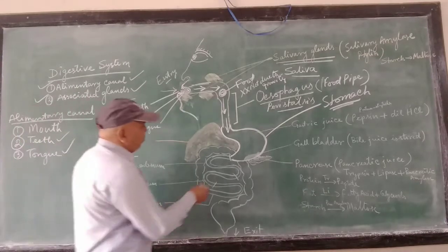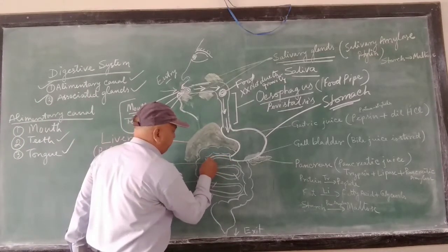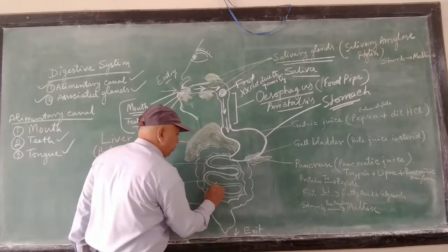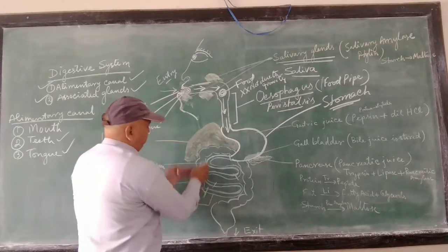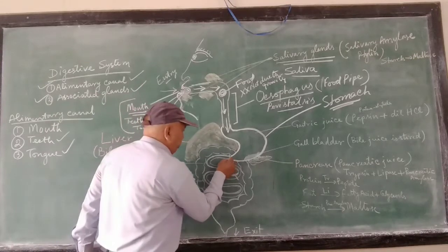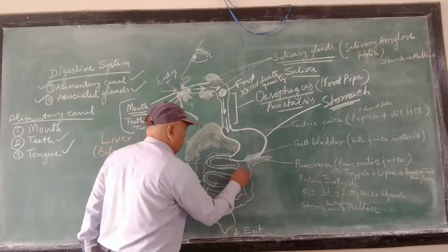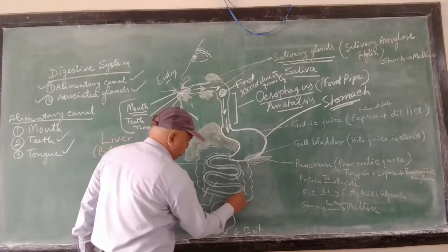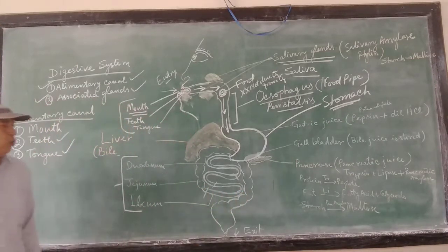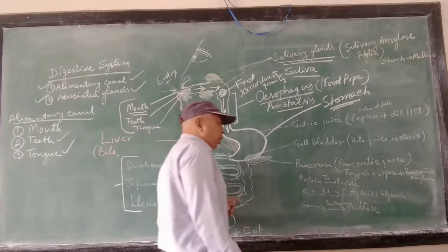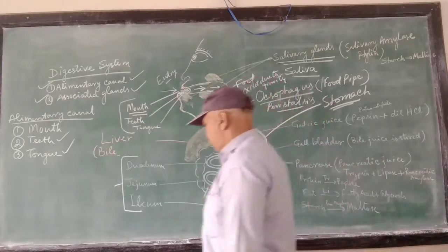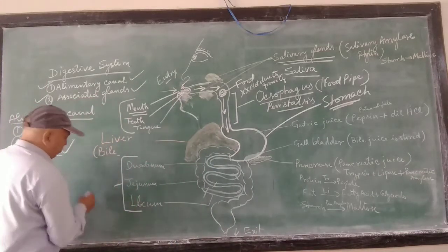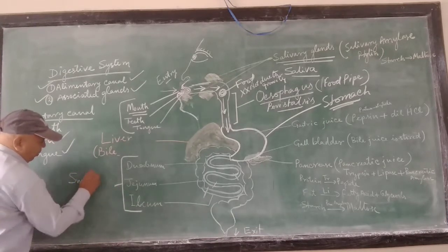Small intestine is this thin pipe — thin but a long one. It continues up and develops into a thick pipe. This thin but long pipe — long as much as some 20 to 21 feet — is known as the small intestine. It is later read as duodenum, jejunum, and ileum, and they make up the small intestine.